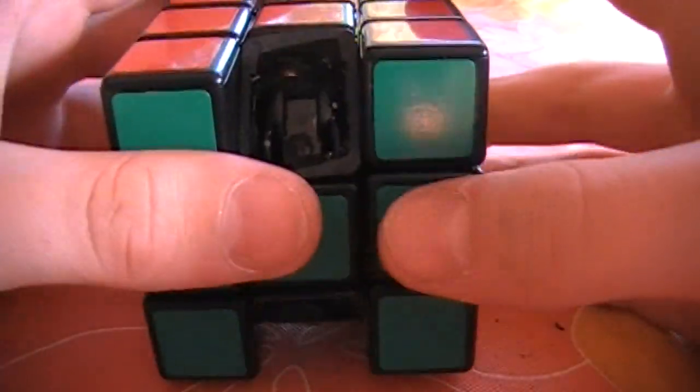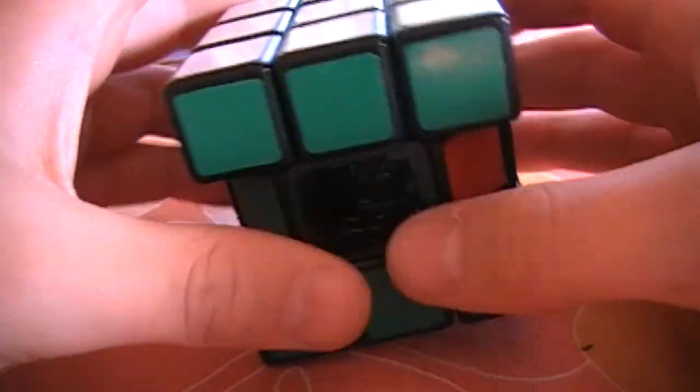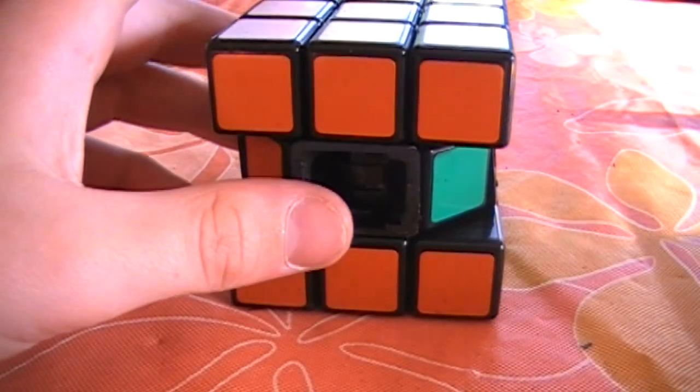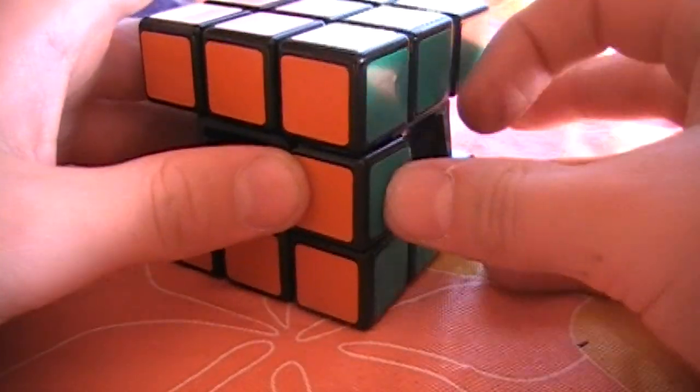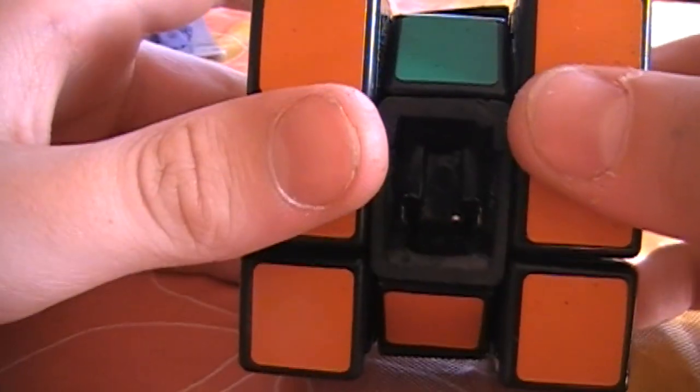Okay, so here I've put it together, and you can see if I turn these layers like this, this is what it's going to be like. These are going to be like the centers, and then these parts are going to be extended out like this, and it will be just like a regular cube. But you can see there's a lot of imperfections.